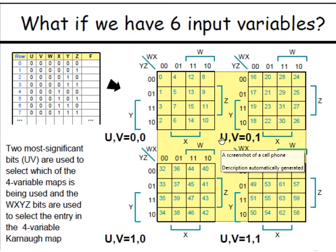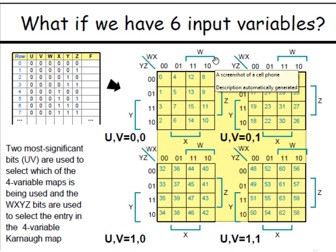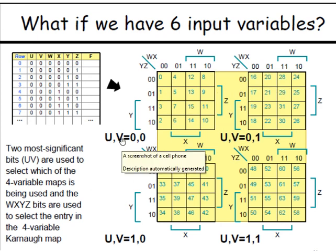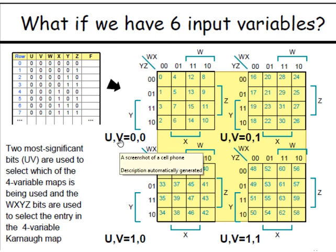In the six variable K-map, you can see the numbering across the maps. There are two variables on this side, and the sixth variable makes a map arrangement. The missing two variables — the fifth variable U and sixth variable V — provide the values for each of the four sub-maps.